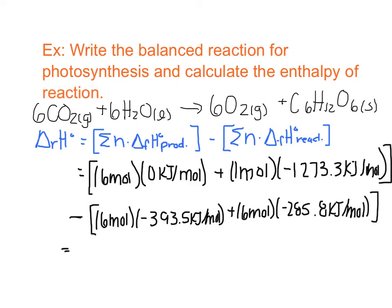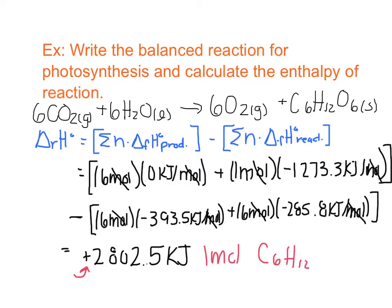So when I do all of that math there, I should get a positive 2,802.5 kilojoules. All of the moles cancel out, because moles are on the bottom of kilojoules per mole. So that means that this is endothermic, because it is positive, and this is to create one mole of glucose. So I can actually write this as the molar enthalpy of this reaction, and include this as an energy term as is.